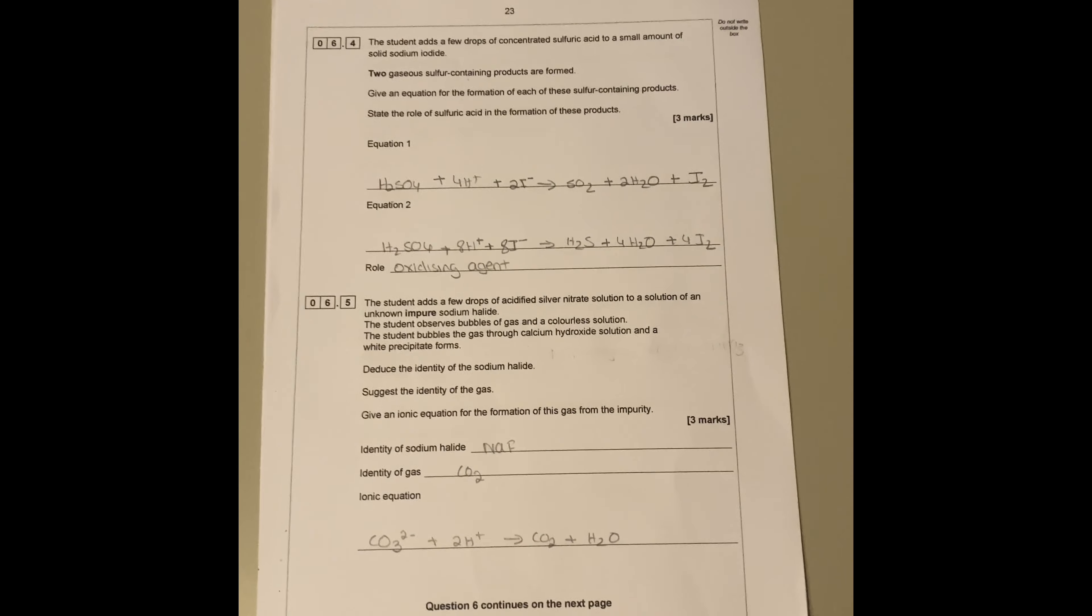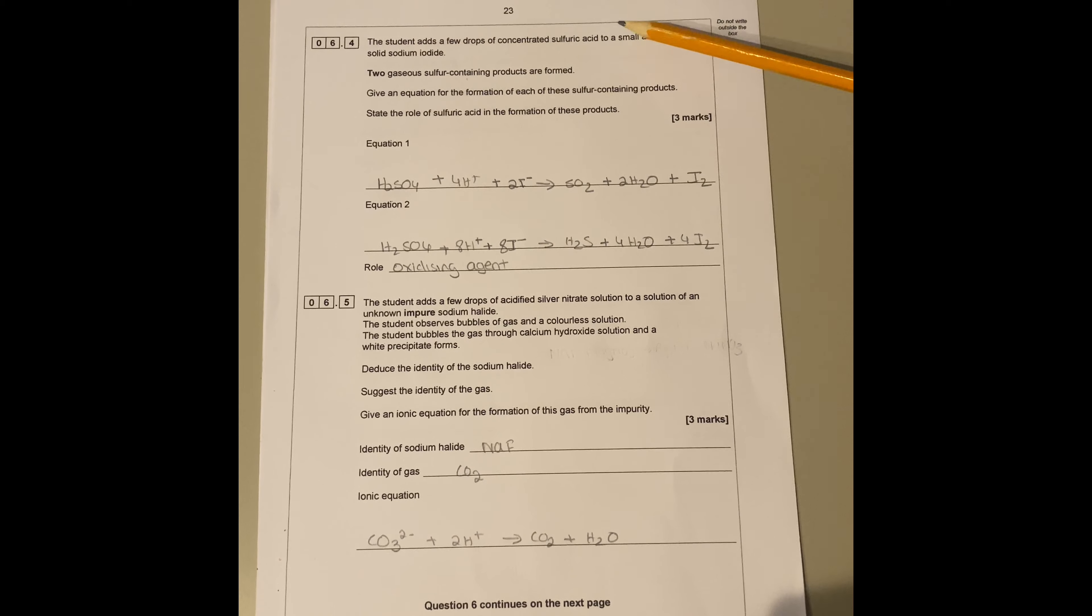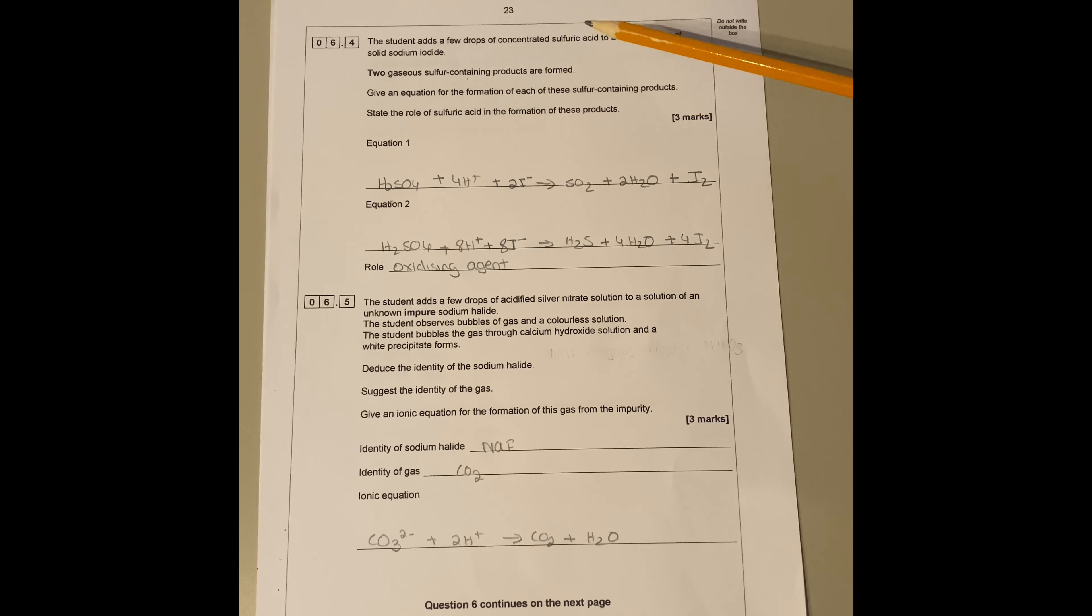Question 6.4: The student has a few drops of concentrated sulfuric acid to a small amount of sodium iodide. This is the group seven reactions with sulfuric acid. Two gaseous sulfur containing products are formed. Give an equation for the formation of these sulfur containing products. First equation is you start with H2SO4 and you form SO2. Then you balance the half equation, so there's four oxygens there, so you add two waters here because you already got two oxygens. Then you have four H plus, so you want four H plus and then you have the iodine there, so you want two I minus there.